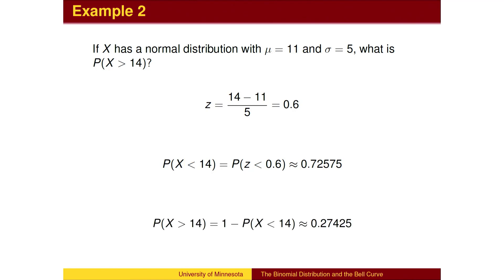However, we weren't asked about the value below 14. We wanted to know the probability of x being above 14, which is the portion of the population that is not below 14. To get the answer, we subtract 0.72575 from 1 to get a probability of 27.425%.